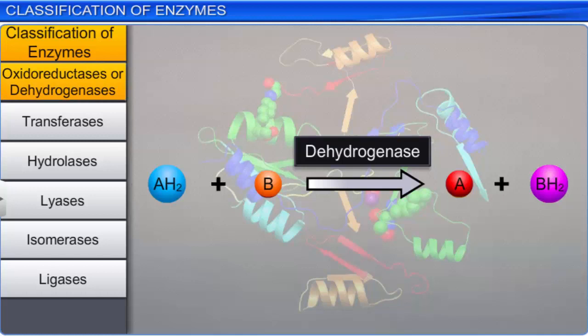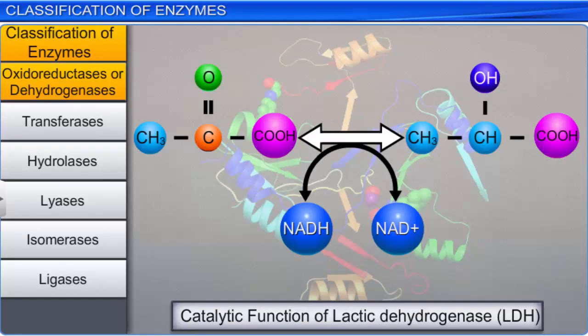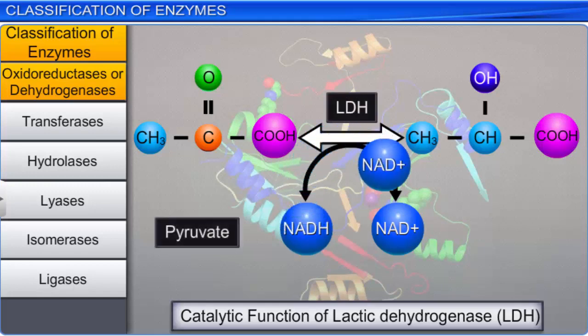Oxidoreductases or dehydrogenases are enzymes that catalyze the transfer of electrons and hydrogen ions from one molecule called the reductant to another molecule or the oxidant. Here, the reductant is the electron donor, while the oxidant is the electron acceptor. An example of an oxidoreductase enzyme is lactic dehydrogenase, which converts pyruvic acid into lactic acid and vice versa.